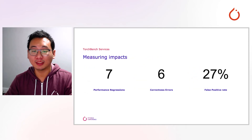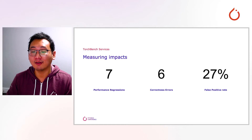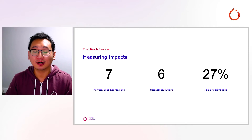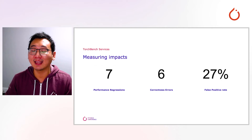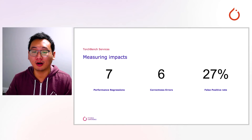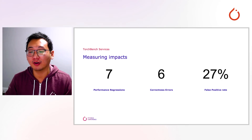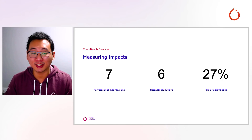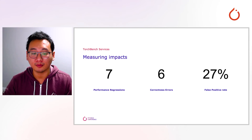Since the development of TorchBench workflows, we have discovered seven performance regressions and six correctness errors. Correctness errors include breaking the existing model code or causing unexpected CUDA memory leaks. Note that the false positive rate of our CI is 27%, which means the CI workflow can attribute performance changes to a commit, but after manual inspection, the commit is actually irrelevant to the performance signal. We are working to further decrease the false positive rate.